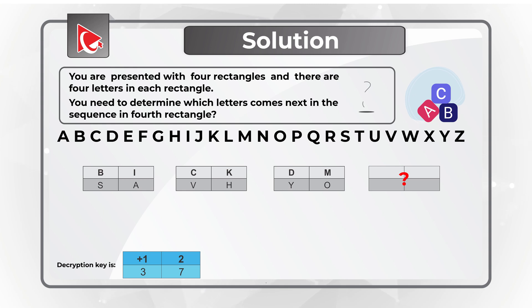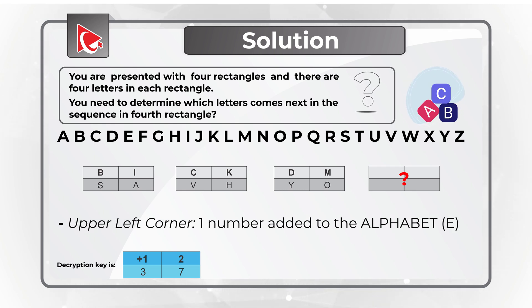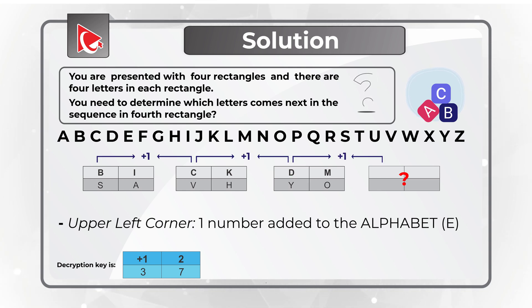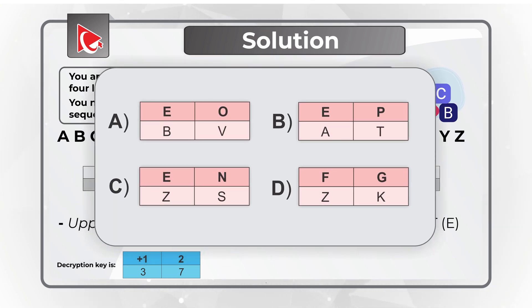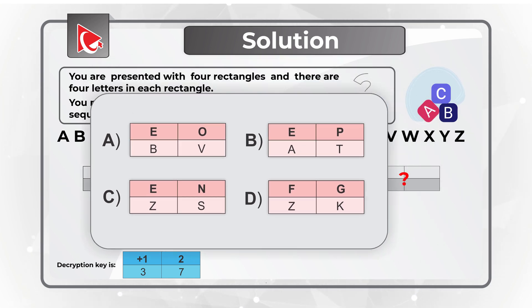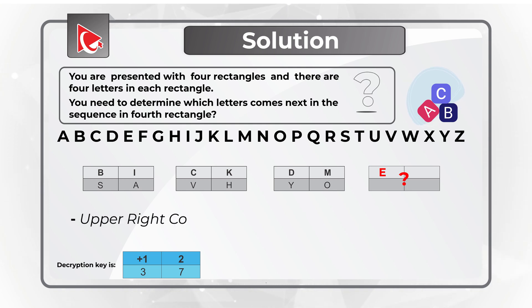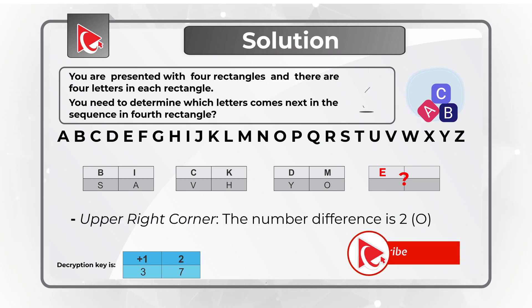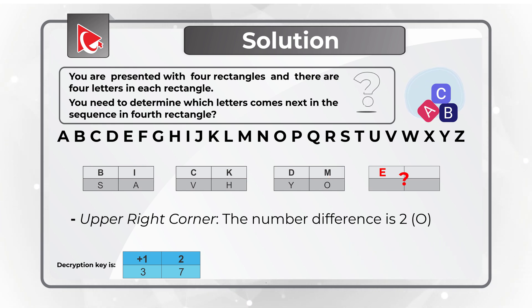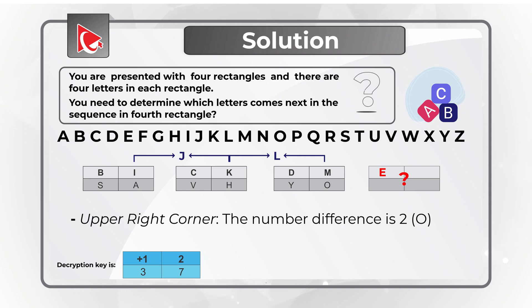Let's start with the upper left corner. The existing sequence shows letters B, C, D — matching the English alphabet 1 to 1 — so the next letter would be E. Now look at the upper right corner: the letters are I, K, and M. Knowing the alphabet: H, I, (J missing), K, L, M, and O — the increment is 2, which matches the second number in our decryption key.